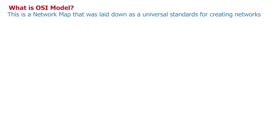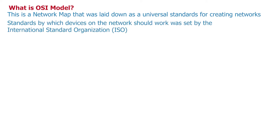You may be asking what an OSI model is. This is a network map that was laid down as a universal standard for creating networks. In everything we do as humans there are rules and standards that govern how things should be done. As technology advanced and many tech manufacturing companies emerged, there came the need to set standards by which devices on a network should work to achieve a common goal of error-free communication and data transmission. These standards were defined and put together by the International Organization for Standardization, also known as ISO, and the result was called the OSI model.